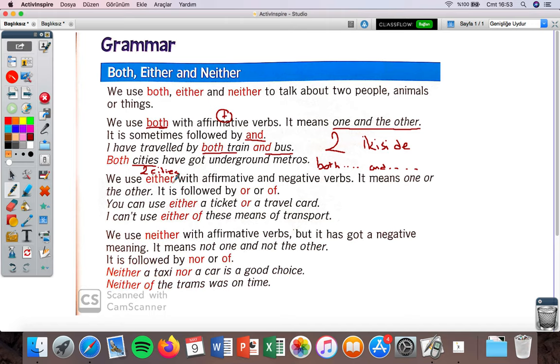We use 'either' with affirmative, positive, and negative verbs. So either is used with both positive and negative verbs. It means one or the other. Again we're talking about two things, but I mean one or the other. It's followed by 'or' or 'of', but usually we use either with 'or', like this: either you or your sister.